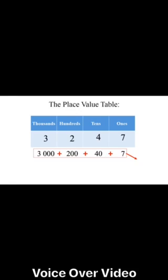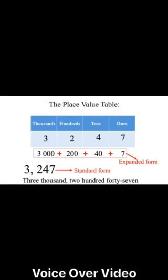Now, if I add these numbers with each other, the equation becomes 3,000 plus 200 plus 40 plus 7, which is the expanded form of this number. If the number stays as it is, like it's given, it is the standard form. And finally, you can write it in the word form as presented below.